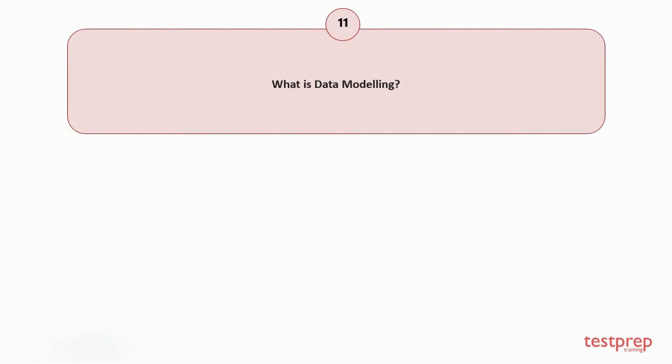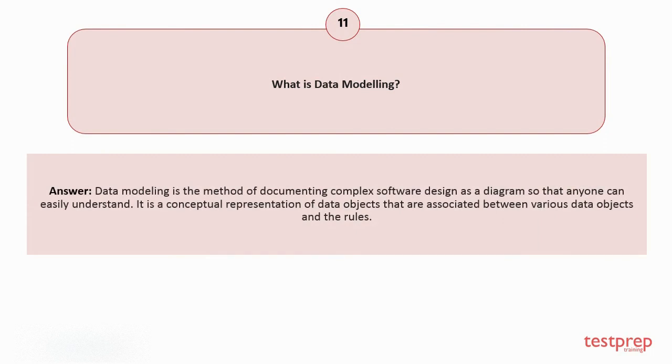Question number 11: What is data modeling? Your answer is: Data modeling is the method of documenting complex software design as a diagram so that anyone can easily understand. It is a conceptual representation of data objects that are associated between various data objects and the rules.